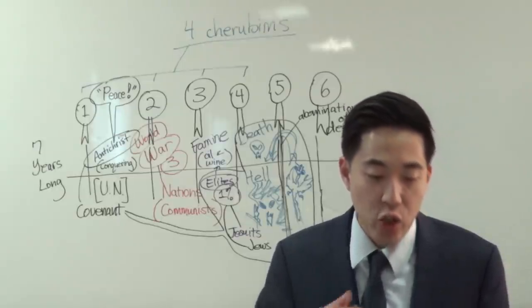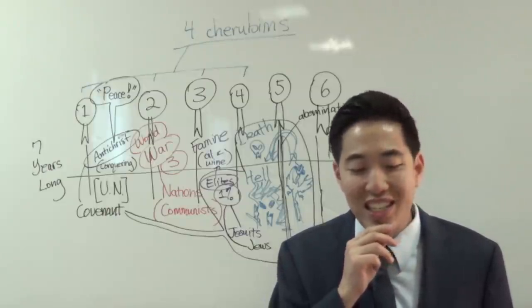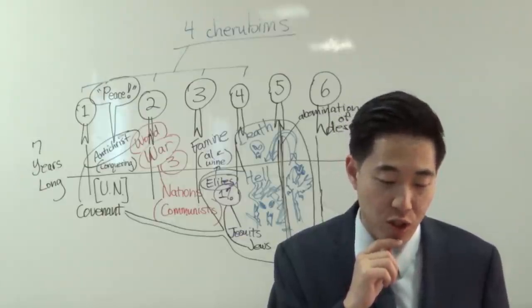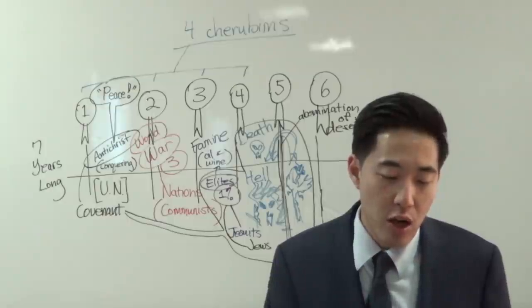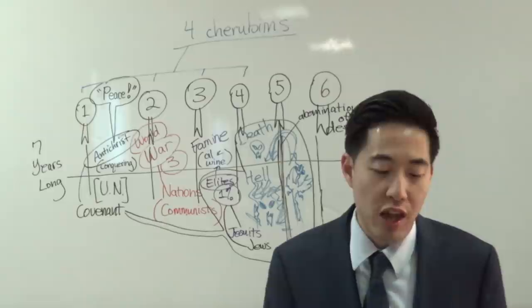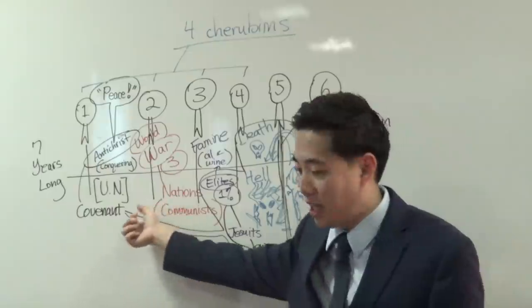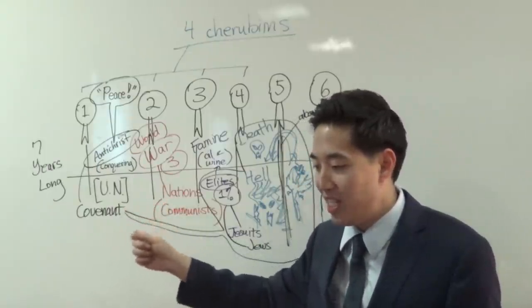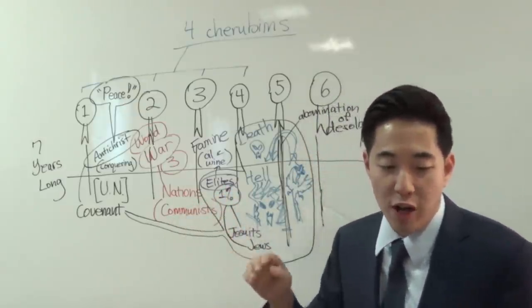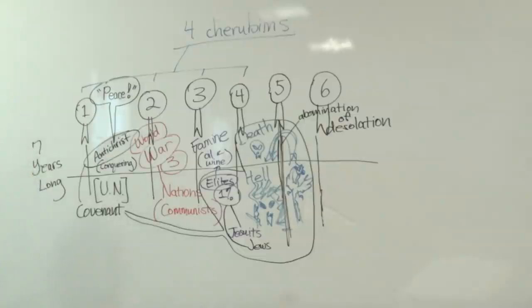Now here's something interesting though, is that when they make this covenant, look at this. This entity, when the overflowing scourge shall pass through, it shall not come unto us, for we have made lies our refuge, and under falsehood have we hid ourselves. That's right. If you look at past history of elites, they always make crooked deception, deal, sneaky. Through this, they have this covenant where they're safe. But they're going to be safe when this overflowing scourge, they call it, passes through.